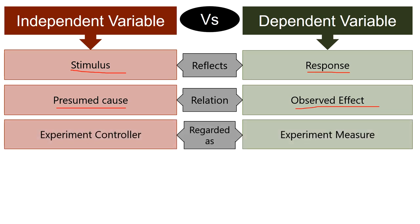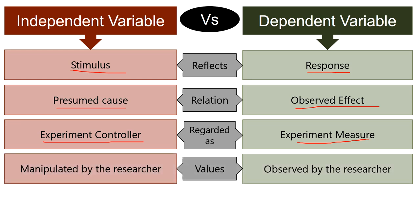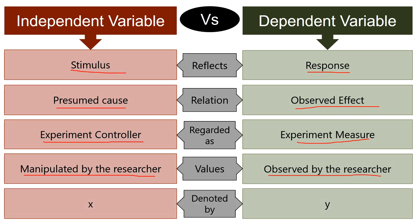Further, the independent variable is also called the experiment controller because it is the variable which controls the entire experiment. On the contrary, the dependent variable is also known as the experiment measure because it is being measured during the experiment. The value of the independent variable is manipulated by the researcher, whereas the value of the dependent variable is observed by the researcher. Last but not the least, the independent variable is plotted on the x-axis whereas the dependent variable is plotted on the y-axis on a graph.